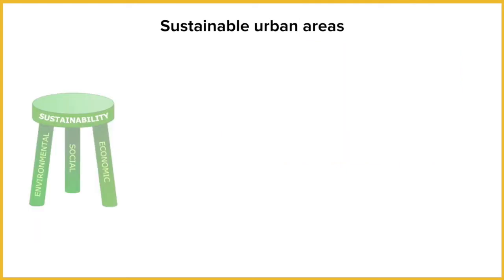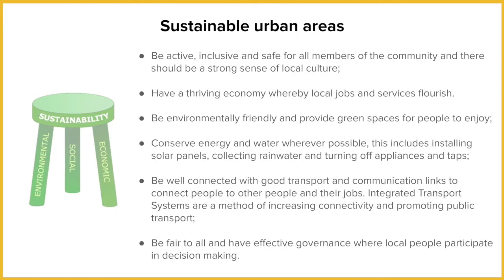This leads us to how we can be sustainable in urban areas. The diagram on the left is called the sustainability stool — it has three legs: environmental, social, and economic. Some elements apply to both rural and urban areas, but some are unique to urban settings. Sustainability in social, environmental, and economic terms should be active, inclusive, and safe for all members of the community.